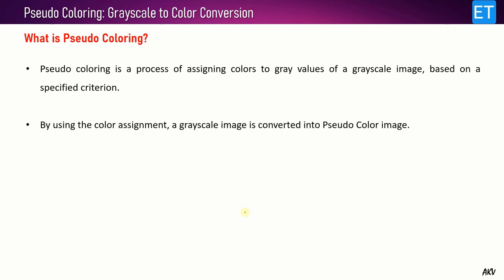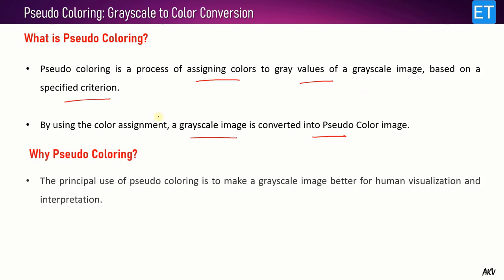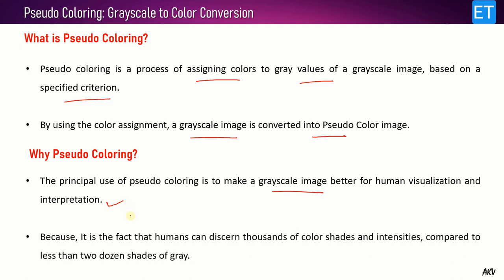Pseudo coloring is a process of converting a grayscale image into a color image — specifically, assigning colors to the gray values of a grayscale image based on some specified criterion. The principal use of pseudo coloring is to make grayscale images better for human visualization and interpretation, because humans can discern thousands of color shades and intensities compared to less than two dozen shades of gray. These colors are pseudo colors, meaning false colors — coloring is not done on the basis of the actual object.